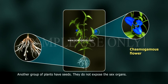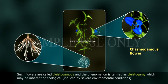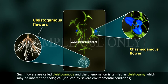Another group of plants does not expose the sex organs at all. Such flowers are called cleistogamous and the phenomenon is termed cleistogamy, which may be inherent or ecological, induced by severe environmental conditions.